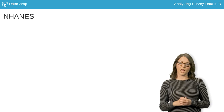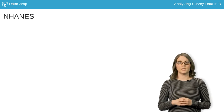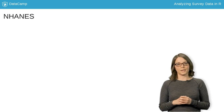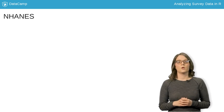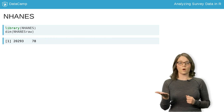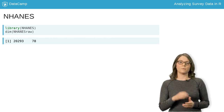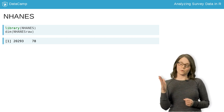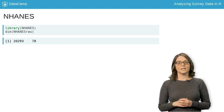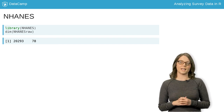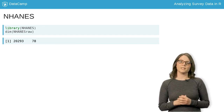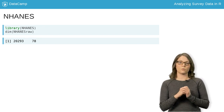The 2009-2012 sample data, called NHANES-RAW, can be found in the NHANES package. Running the DIM command returns the number of rows, or observations, and the number of columns, or variables contained in the data set. We see that the NHANES-RAW data set contains 78 variables on 20,293 people.